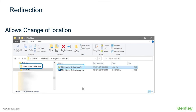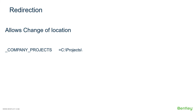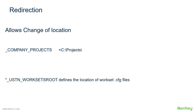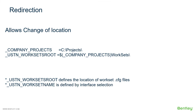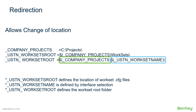During our exercise in the next lesson, we will recreate this environment so that it functions. To implement redirection, we set variables — in this case, we set company_projects to C:\projects. To reset the worksets_root to be under this location, we set the worksets_root variable, which defines the location of worksets cfg files. We utilize the company_projects variable and append 'worksets' to create the new variable definition. The workset_name is defined by the interface selection, and we set workset_root using company_projects plus the workset_name, establishing the root folder with the specific workset name.